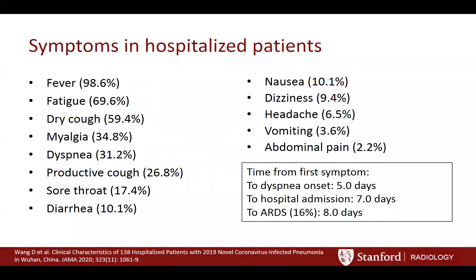In a population of hospitalized patients — people who had illness severe enough to require hospitalization — the most common symptoms are fever, fatigue, and dry cough. These symptoms, which include myalgia and dyspnea, are not specific to COVID; they're common to many URIs. From the time of first symptom to developing shortness of breath is a median of five days, and from first symptom to developing ARDS has a median of eight days.